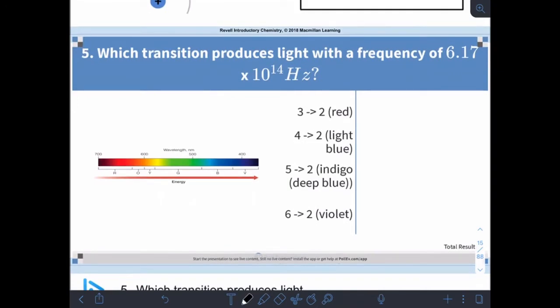Let's see how these transitions from energy level three to two, or four to two, or five to two, or six to two, relate to what we've been doing with frequencies. We have our equation c = λν. We want to know what is the wavelength because the wavelength relates to the color. If I rearrange that equation, I get c/ν = λ. We have 3×10⁸ m/s divided by 6.17×10¹⁴ Hz, and we get a wavelength of 4.86×10⁻⁷ meters or 486 nanometers.